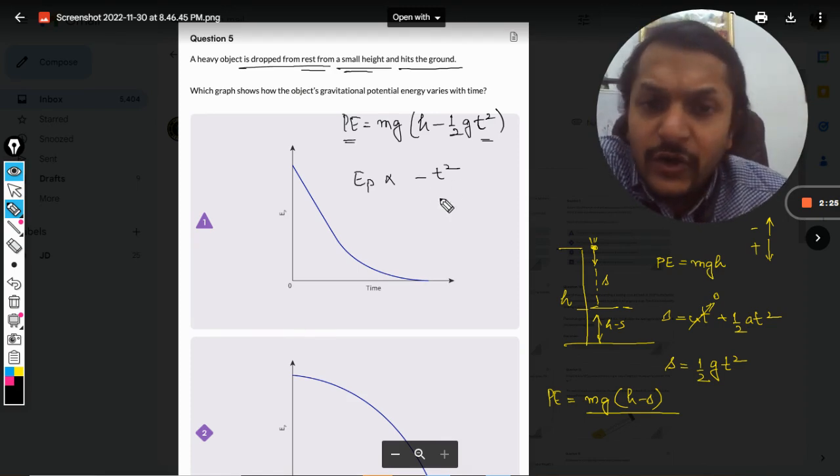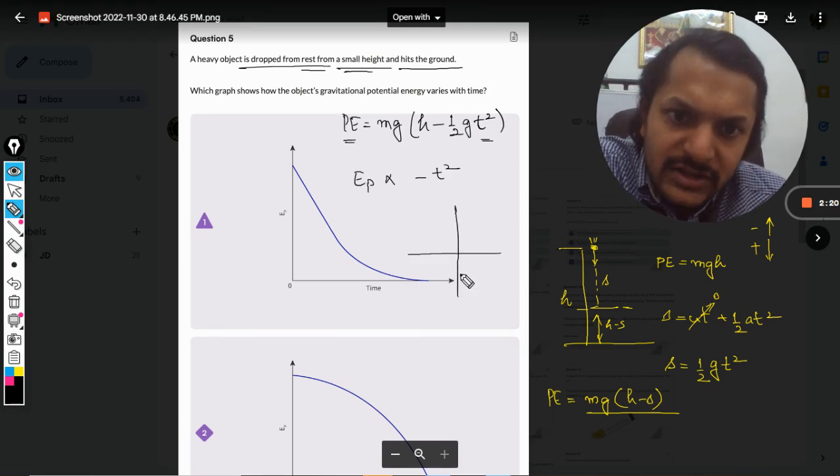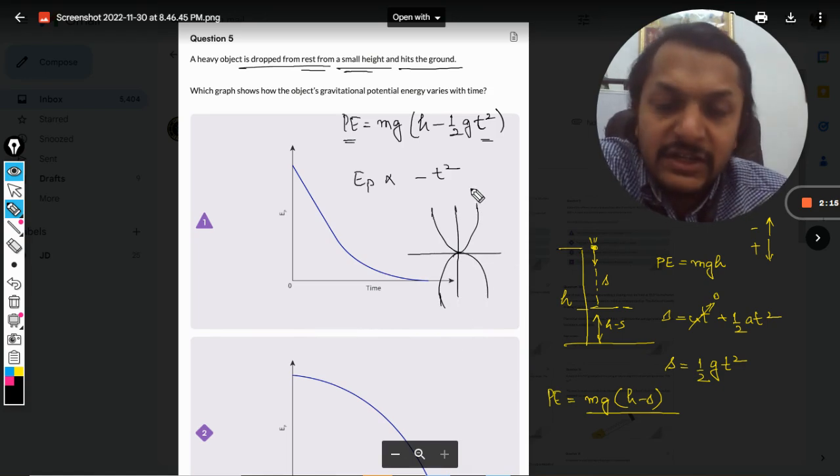And that is what is here. So how do you draw the graph of negative of T squared? This is positive of T squared, and the negative is this. We have seen it in mathematics.